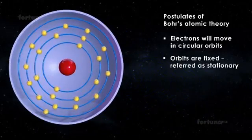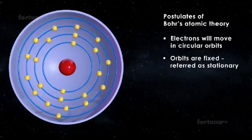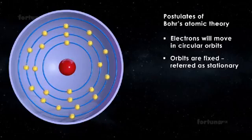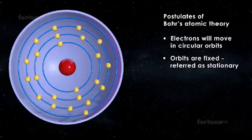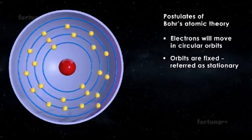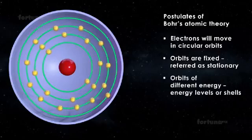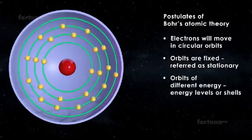The orbits are fixed and referred to as stationary, having electrons that orbit without radiating any energy. Bohr described these orbits of different energy as energy levels or shells.